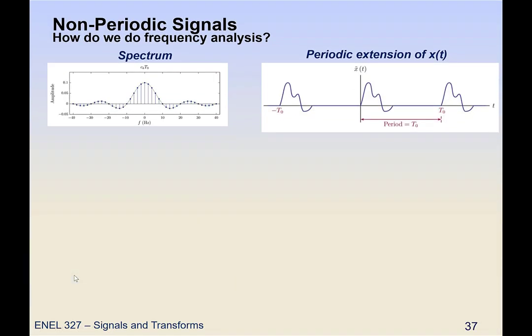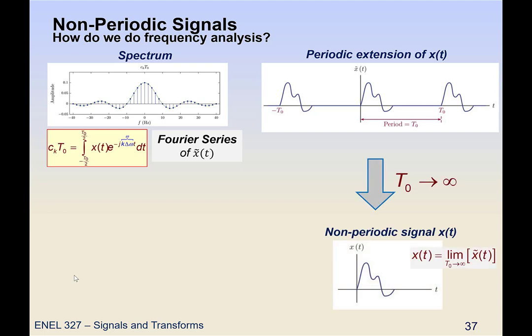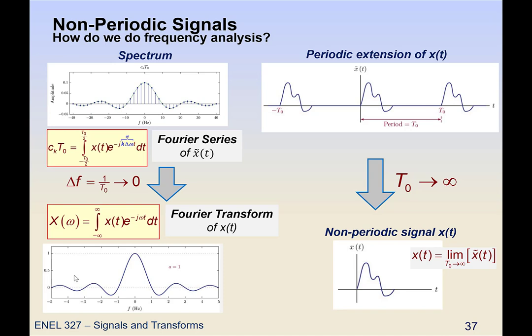Our periodic extension of x has a spectrum, and the Fourier series of that periodic expansion looks like this expression. In the limit we can recover our non-periodic signal, and what happens is we move from the Fourier series expression to the Fourier transform expression. This is what is defined as the Fourier transform of x(t). So we use Fourier transforms for non-periodic signals and Fourier series for periodic signals. There is a linkage between them — the spectrum of the periodic case is discrete while the spectrum in the transform case is continuous.